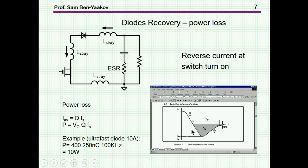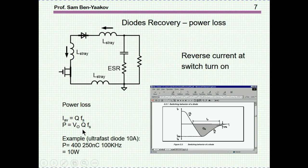Now, another point to make is that associated with this phenomenon is, of course, some power loss, because you have charges coming off in this loop. There is an average current, and the charge times frequency, times the voltage, gives you power. So this is the amount of power associated with this phenomenon. For example, if you have 400 volts, 250 nanocoulombs of Q — which is pretty good for a 10 amp diode — and 100 kilohertz, you have 10 watts. So it's not zero; it's a certain value you have to take into account.